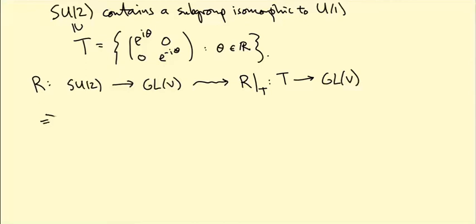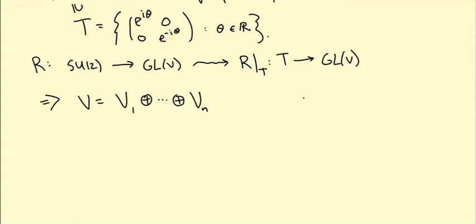So this tells us that V splits as a direct sum V1 direct sum dot dot dot direct sum VN. Let's say where N is the dimension of V.